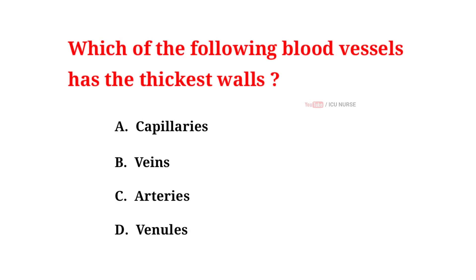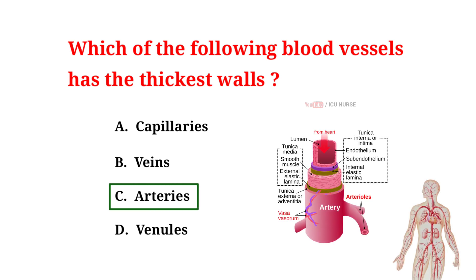Which of the following blood vessels has the thickest walls? A. Capillaries. B. Veins. C. Arteries. D. Venules. And the correct answer is C: arteries. Arteries are the blood vessels that have the thickest walls. They have the thickest walls of all blood vessels because they need to withstand the high pressure from the heart's pumping action.